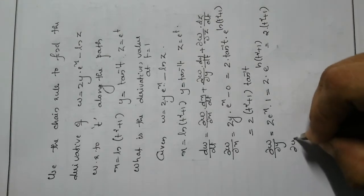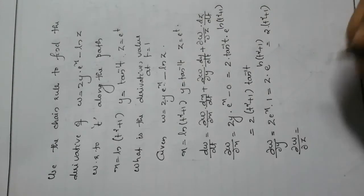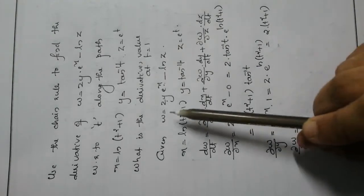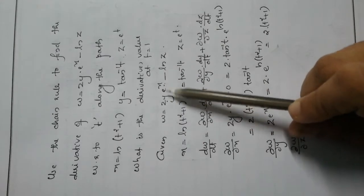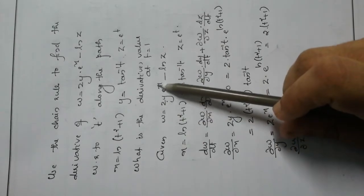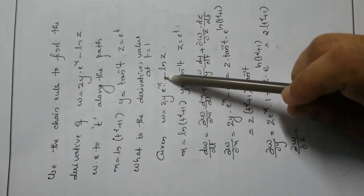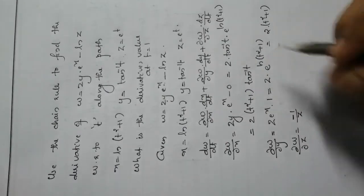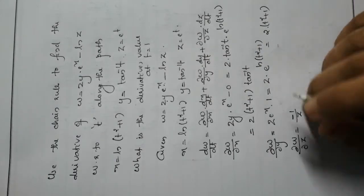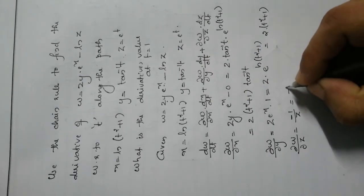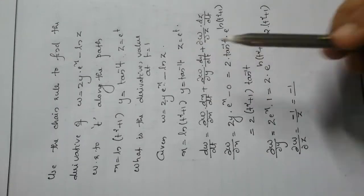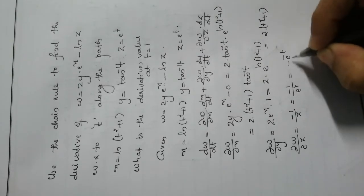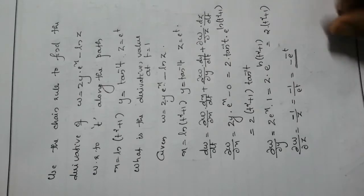Next, ∂w/∂z: derivative of −ln(z) with respect to z is −1/z. Since z = e^t, this equals −1/e^t = −e^(−t). So ∂w/∂z = −e^(−t).